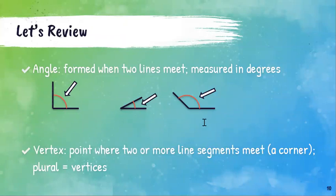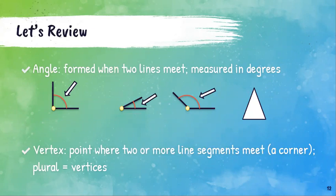So if I look back at these shapes, where are the vertices? Here these two lines meet — that's the corner, that's the point, that's the vertex. Vertex, vertex, vertex, and vertex. If you have a triangle, where are the vertices? Hopefully you noticed that there were three vertices, because these two lines meet here, this line and this line meet here, and this line and this line meet here.